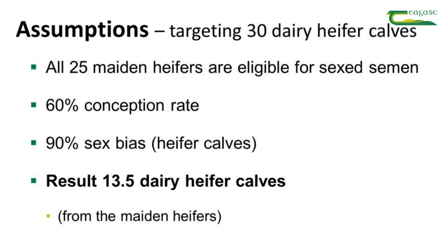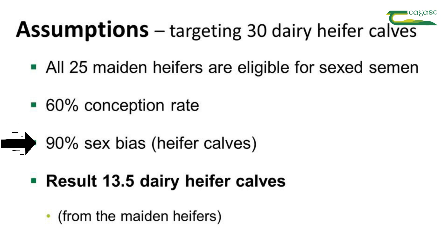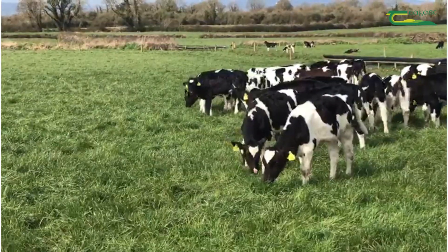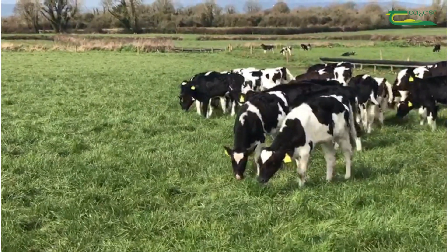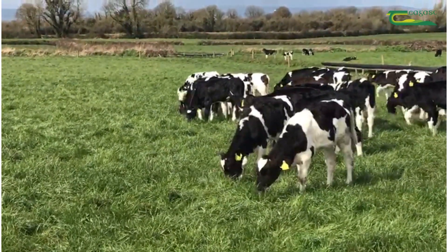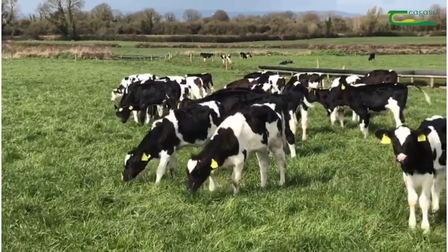We're going to use sex semen first on heifers. Using dairy sex semen AI on all 25 maiden heifers, at 60% conception and 90% sex bias, gives us 13.5 female calves. There's no such thing as half a calf, but the figures are left as-is so you can multiply up or down depending on the herd size you're calculating for.